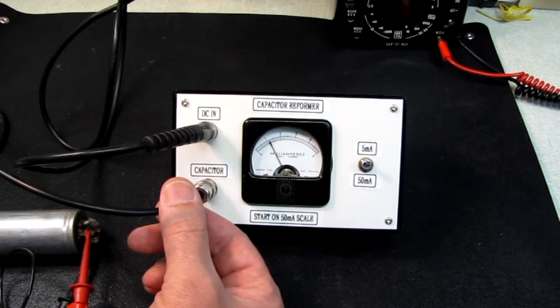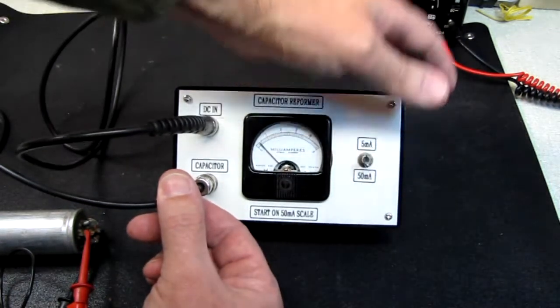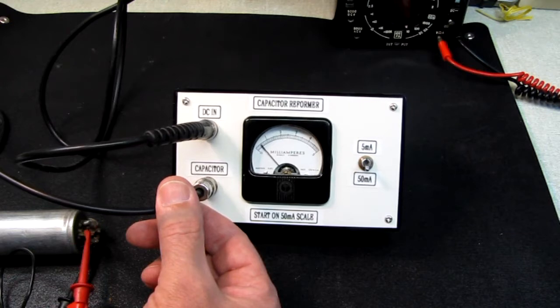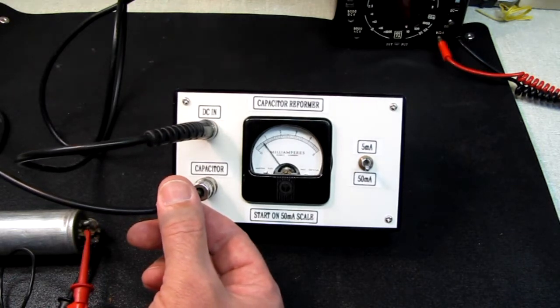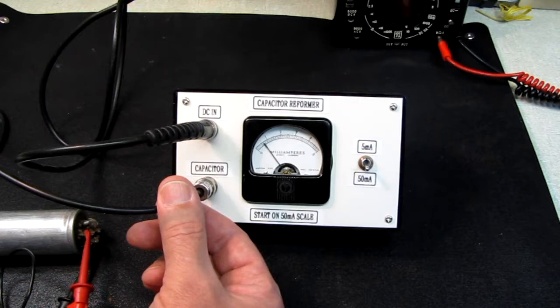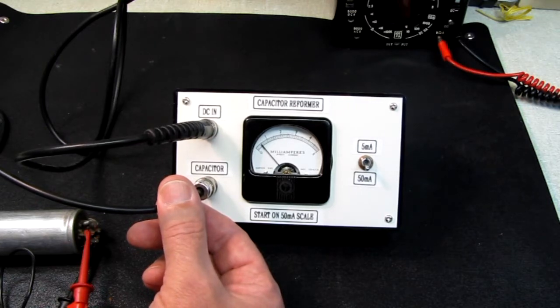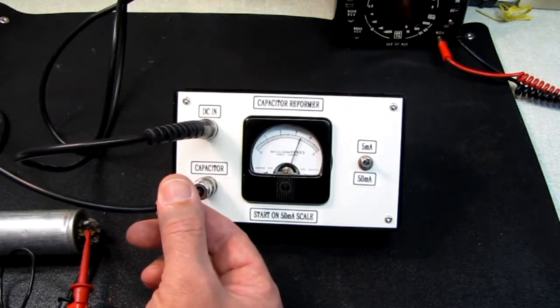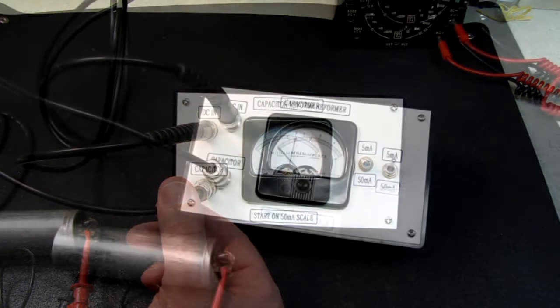So I'm going to let that sit right at that level for a few minutes. And now it's falling off. Let's go back up here. I'm going to bring it up to 300 volts. And again it's falling off. It's jittering around a little bit, settle down. We're under 5 milliamps. I'm going to let that sit.